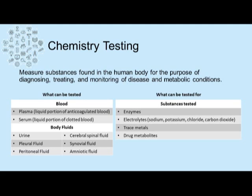Other types of samples tested in a clinical chemistry lab include urine, pleural fluid, peritoneal fluid, cerebral spinal fluid, synovial fluid, and amniotic fluid. The types of substances tested on these body fluid types include enzymes, electrolytes, trace metals, and drug metabolites.